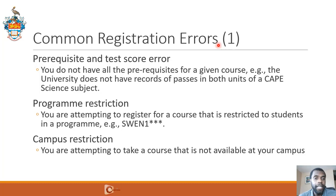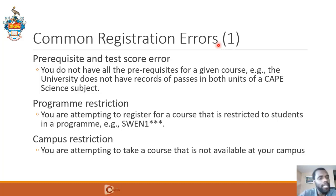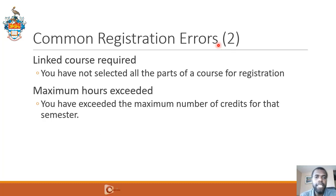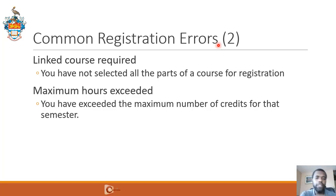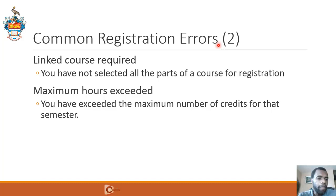A campus restriction will indicate that you're trying to register for a course not available at your campus — for example, a MONA student trying to register for a course at the Western Jamaica campus, or vice versa. You may see a linked course required error, which basically indicates that you have not selected all the parts of a course for registration. Remember, for Comp 1126 and 1127, you have to register for the lecture, the tutorial, secondary discussion and tutorial, and the lab. If you don't register for all of these activities, you're going to see a linked course required error.